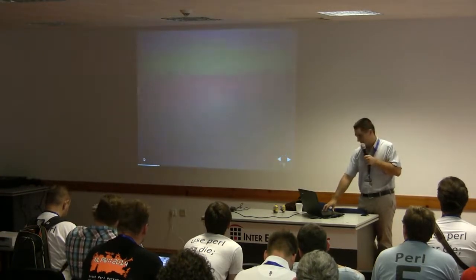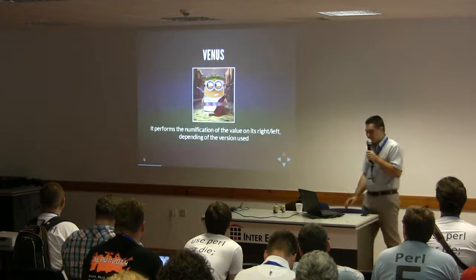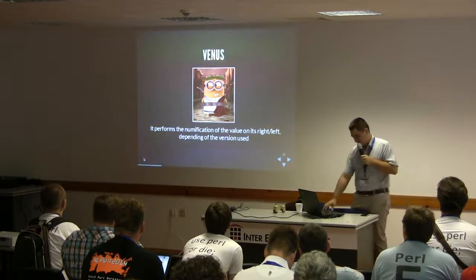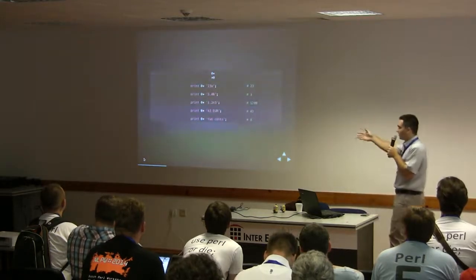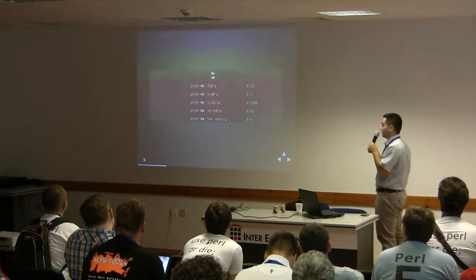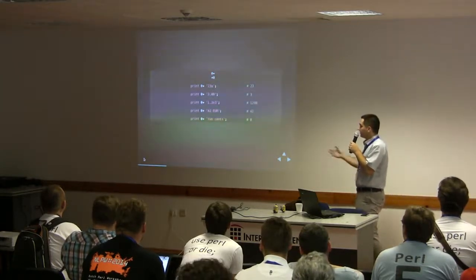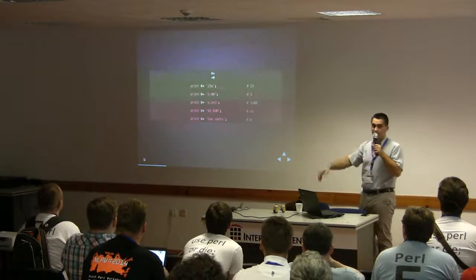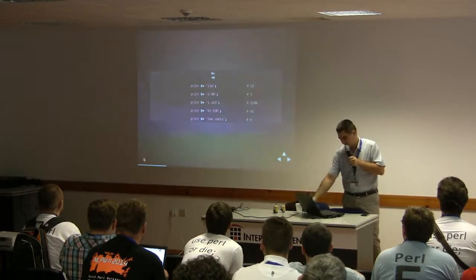First one: Venus. It performs numification of the value on its right or its left depending on the version used. It's an operator used like this: you have a zero-plus or a plus-zero. For example, zero-plus that string gives you twenty-three; zero-plus a float between commas which is also a string gives you three. You can even try '42 euros' - '42 two cents' will give you nothing because it has to start with a number. It's another way to extract numbers from strings.